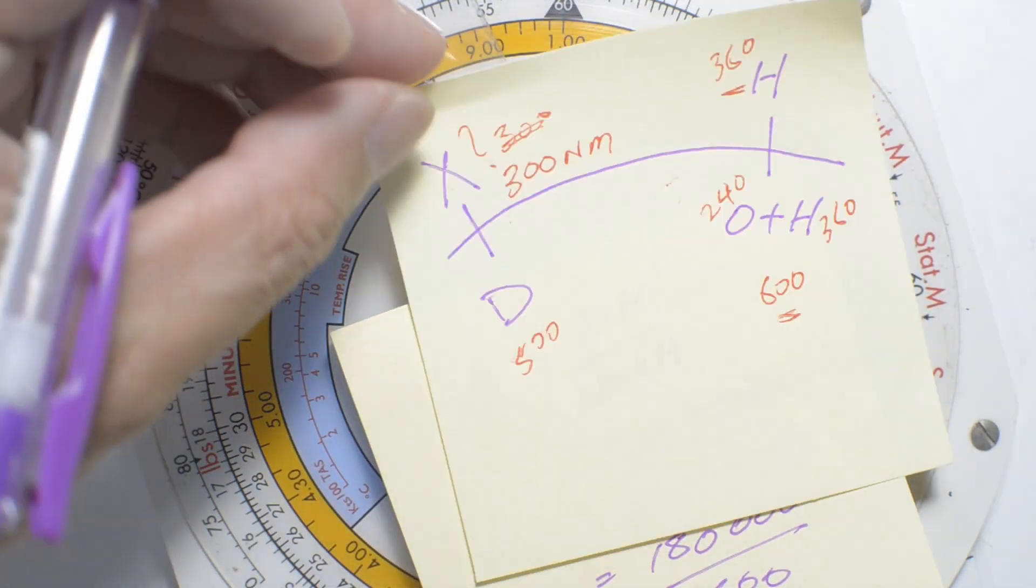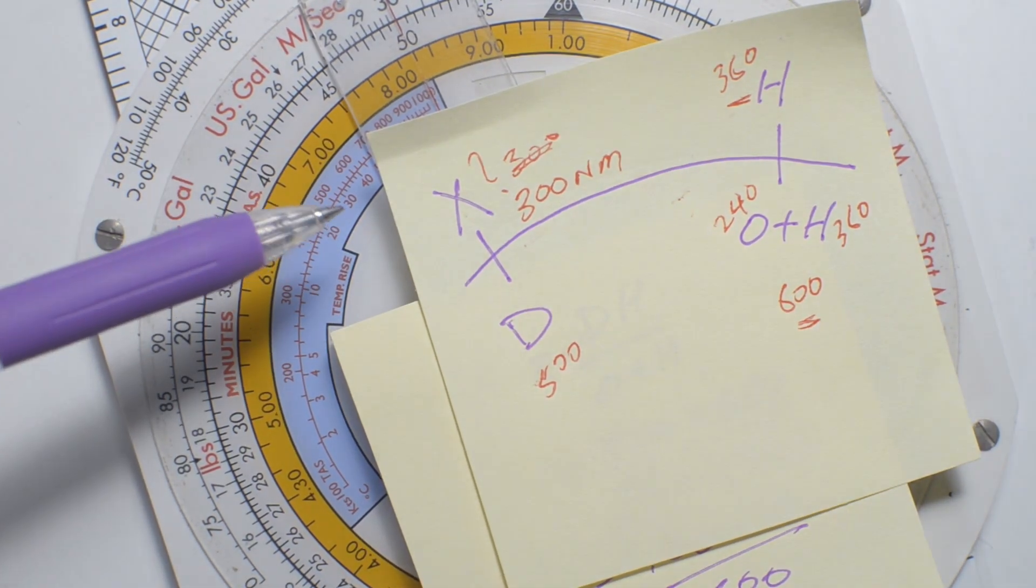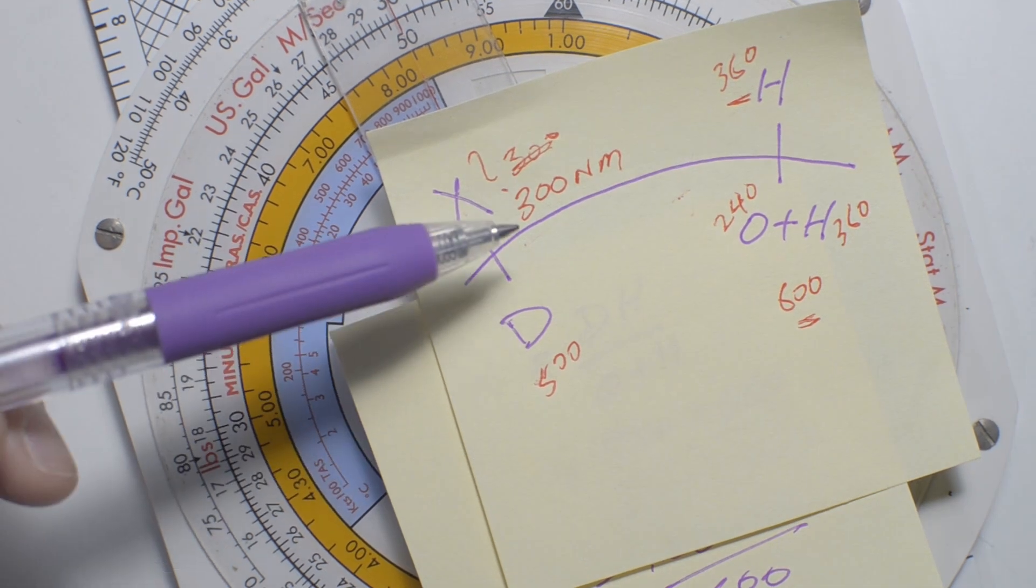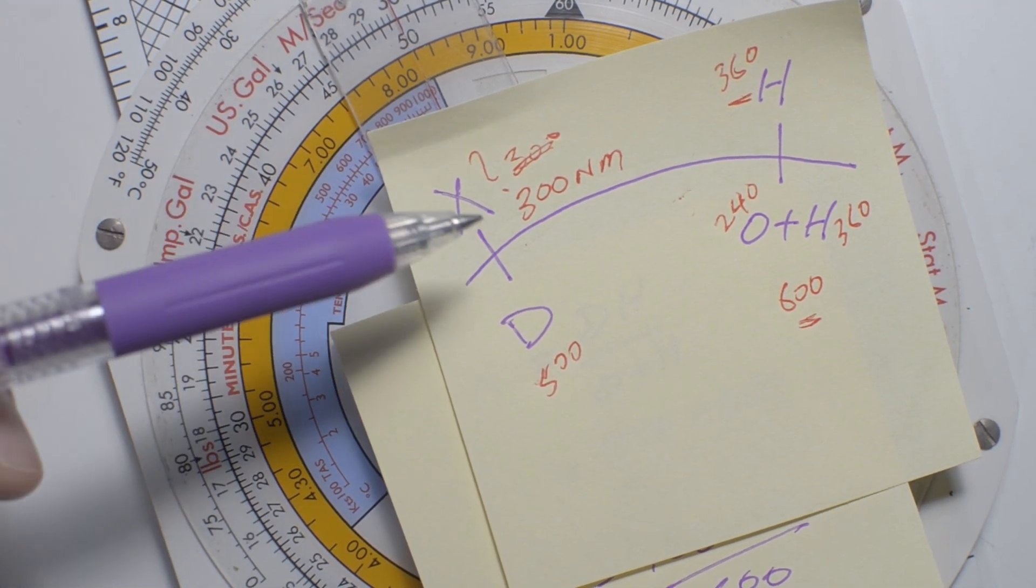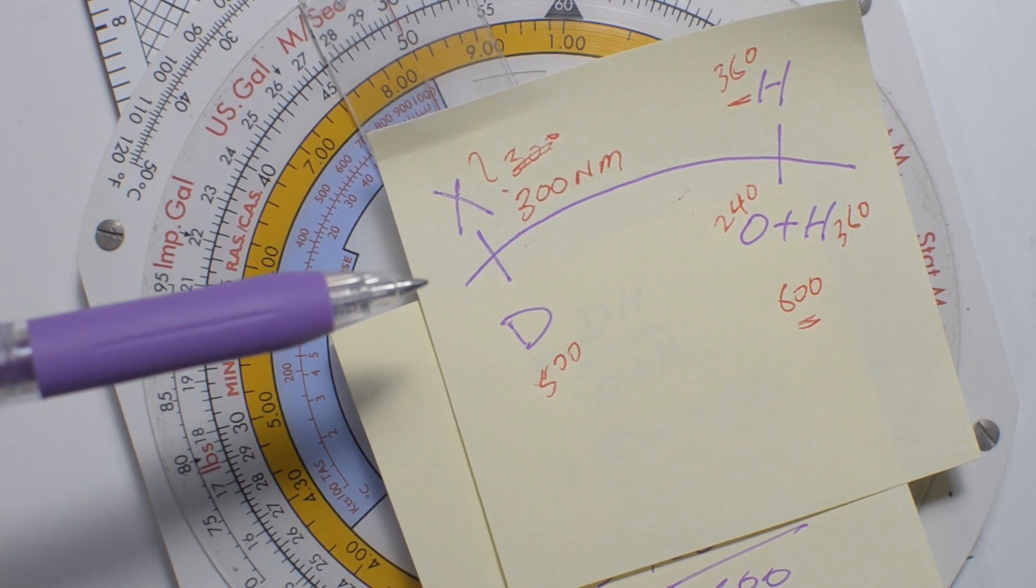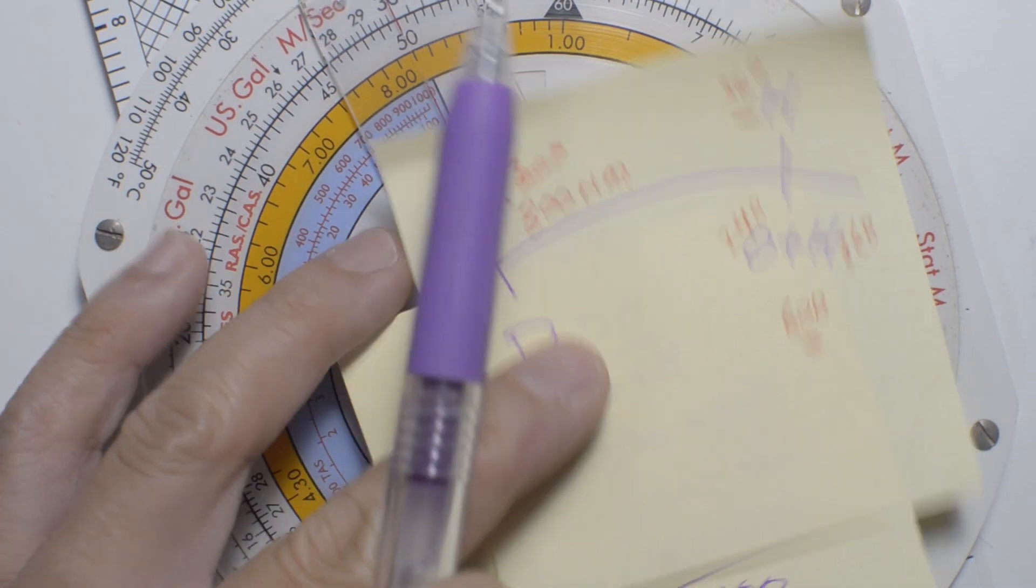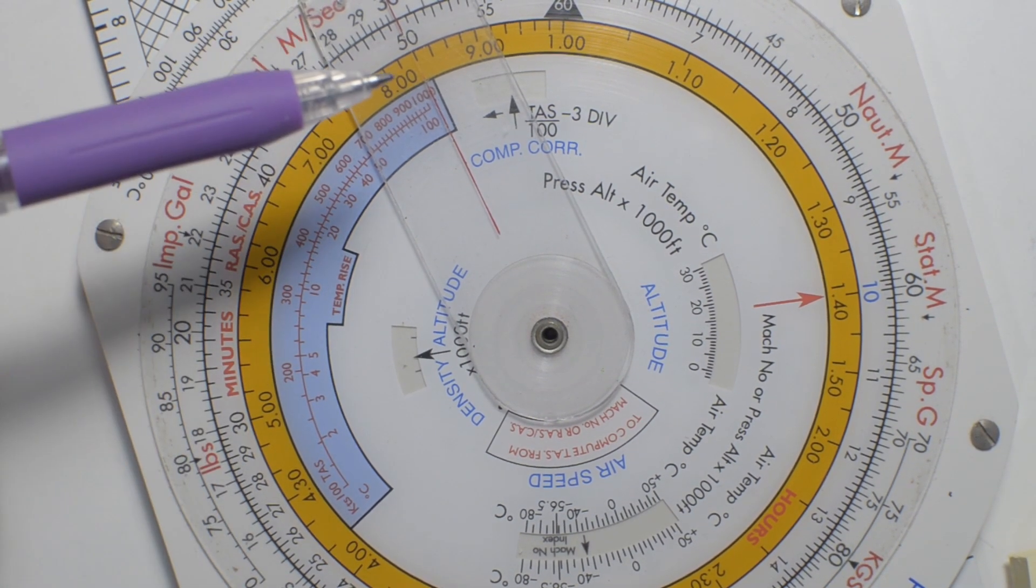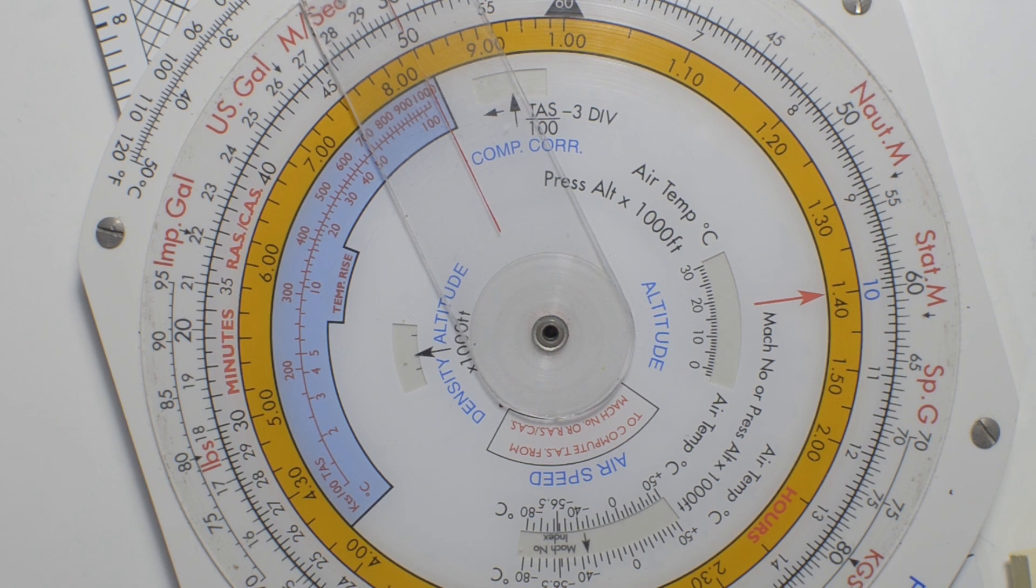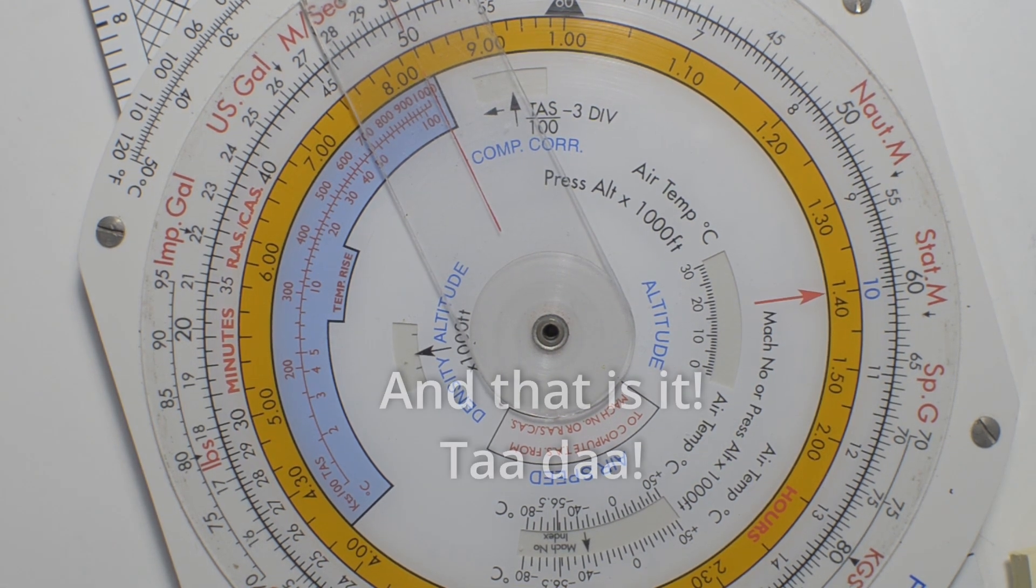And that gives me 300 which is the same value that we had gotten earlier. So these two methods can be used to check each other out to make sure that you have done your calculation the right way or that you have obtained the distance to critical point the right way using your CRP-5 flight computer. And that's all there is to it.